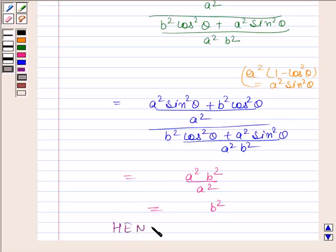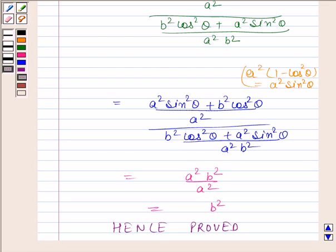Hence, we have proved that the product of the lengths of the perpendiculars drawn from the points (√(a²−b²), 0) and (−√(a²−b²), 0) to the line x/a·cosθ + y/b·sinθ = 1 is equal to b². Bye and take care.